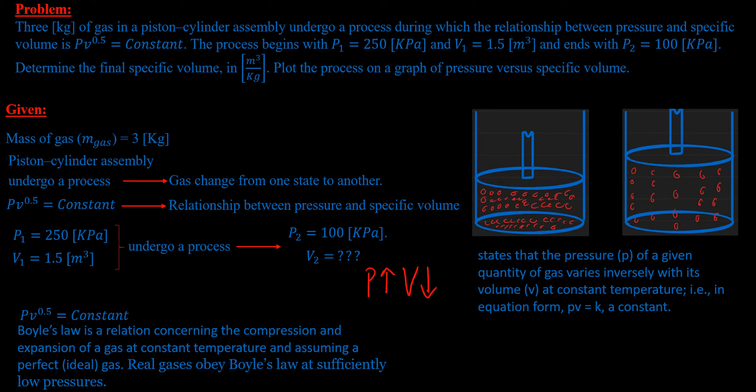At constant temperature, as the pressure decreases, the volume increases. In our case, P1 is 250 kilopascals, the gas goes under a process, and P2 ends up at 100 kilopascals. So what's happening here is pressure is decreasing. As pressure is decreasing, the volume is increasing, and that means that V2 will be greater than V1.